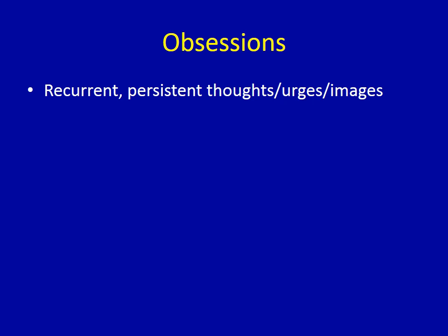Obsessions might be urges, such as a desire or an urge to stab someone or to throw your phone off a bridge. Or they might be images, like a visual image of something bad happening to your pet. So these cognitions can be verbal, desires, or visual, but all of these thoughts share some important components.